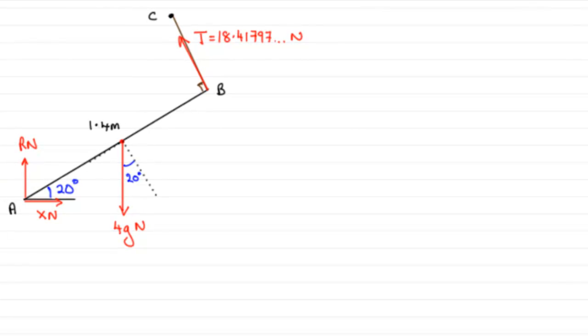Now for this last part of the question, what I've done is I've updated the diagram from the previous part. We found that the tension here in this string was 18.41797 and so on newtons. And for this problem we've got to find the coefficient of friction given that this rod is about to slip. And if it's about to slip then that frictional force has reached its limiting value of mu times R, the contact force here, and that would be measured in newtons. So we've got to find out this coefficient of friction mu.